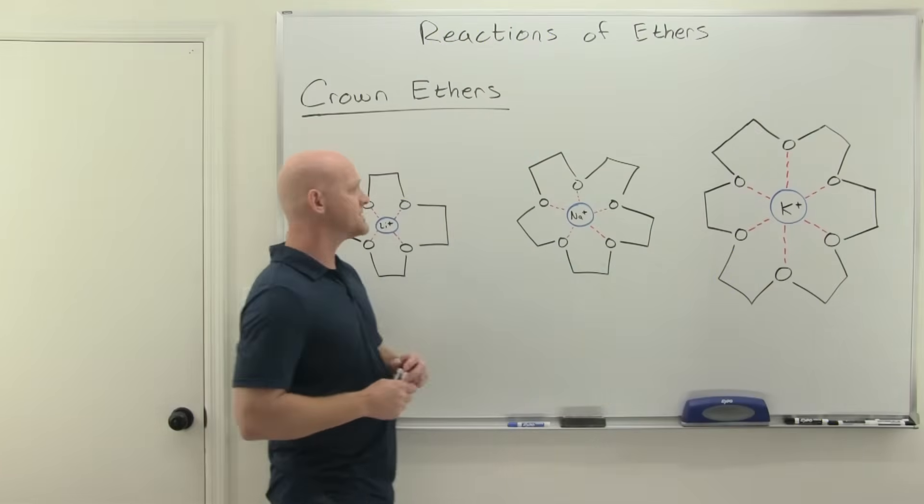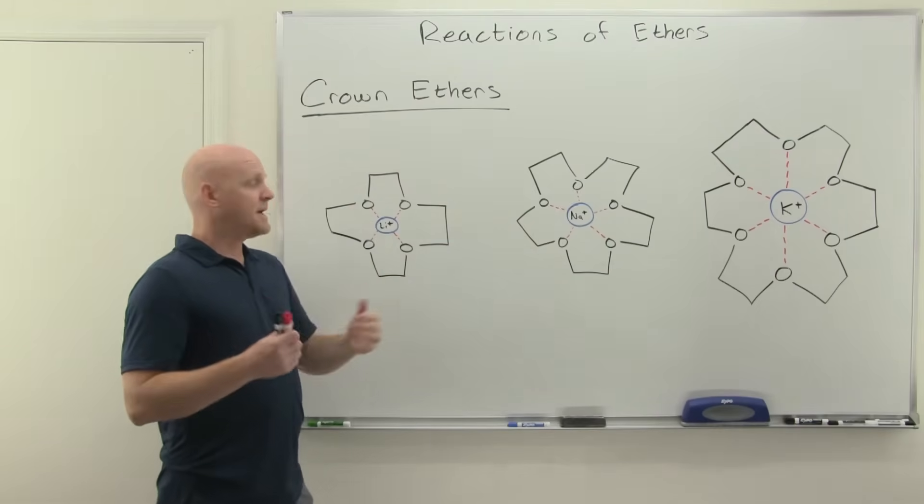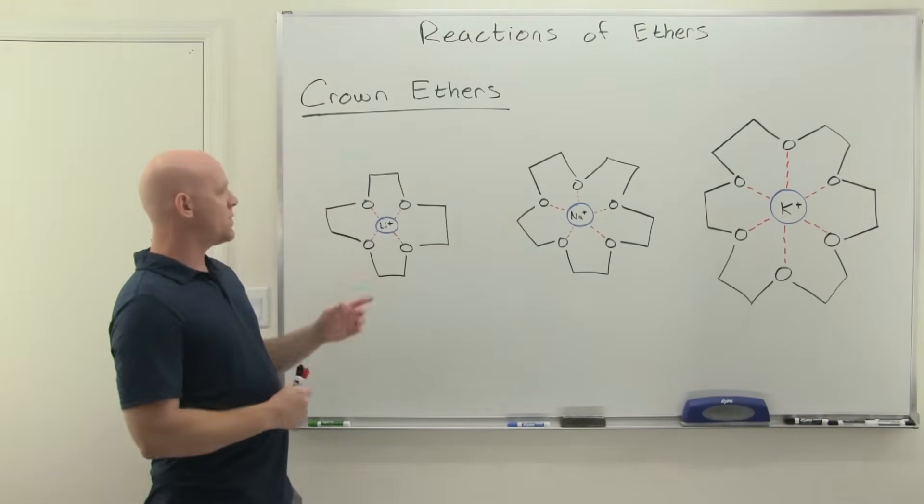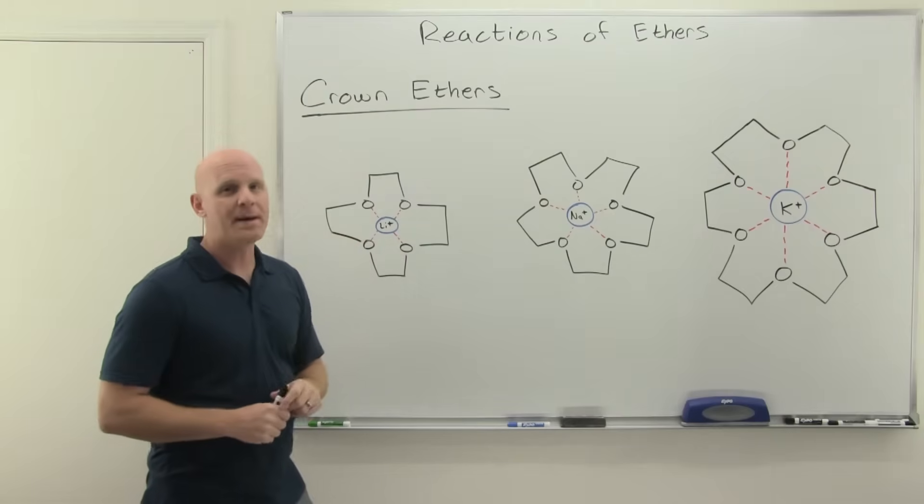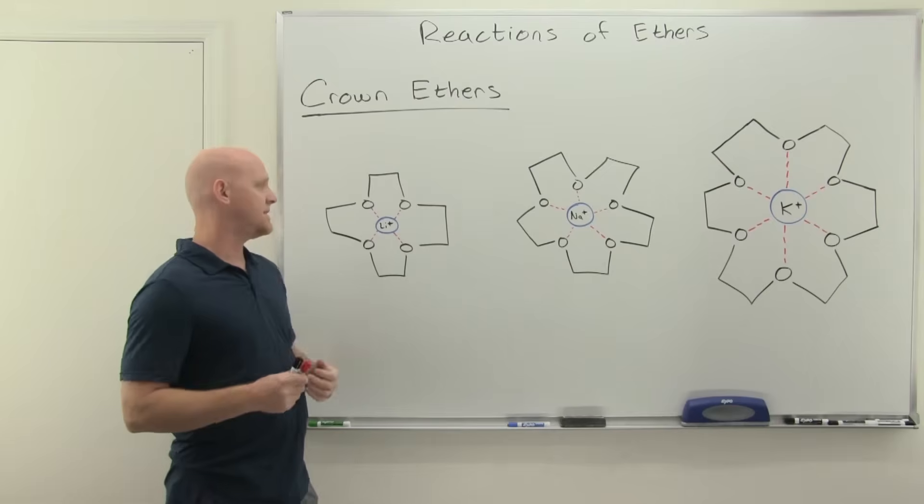Let's talk about these crown ethers for a minute. These are big polyethers, cyclic in nature, and they look like crowns in the way they solvate alkali metal cations. The bigger they get, the larger the cation they will solvate.